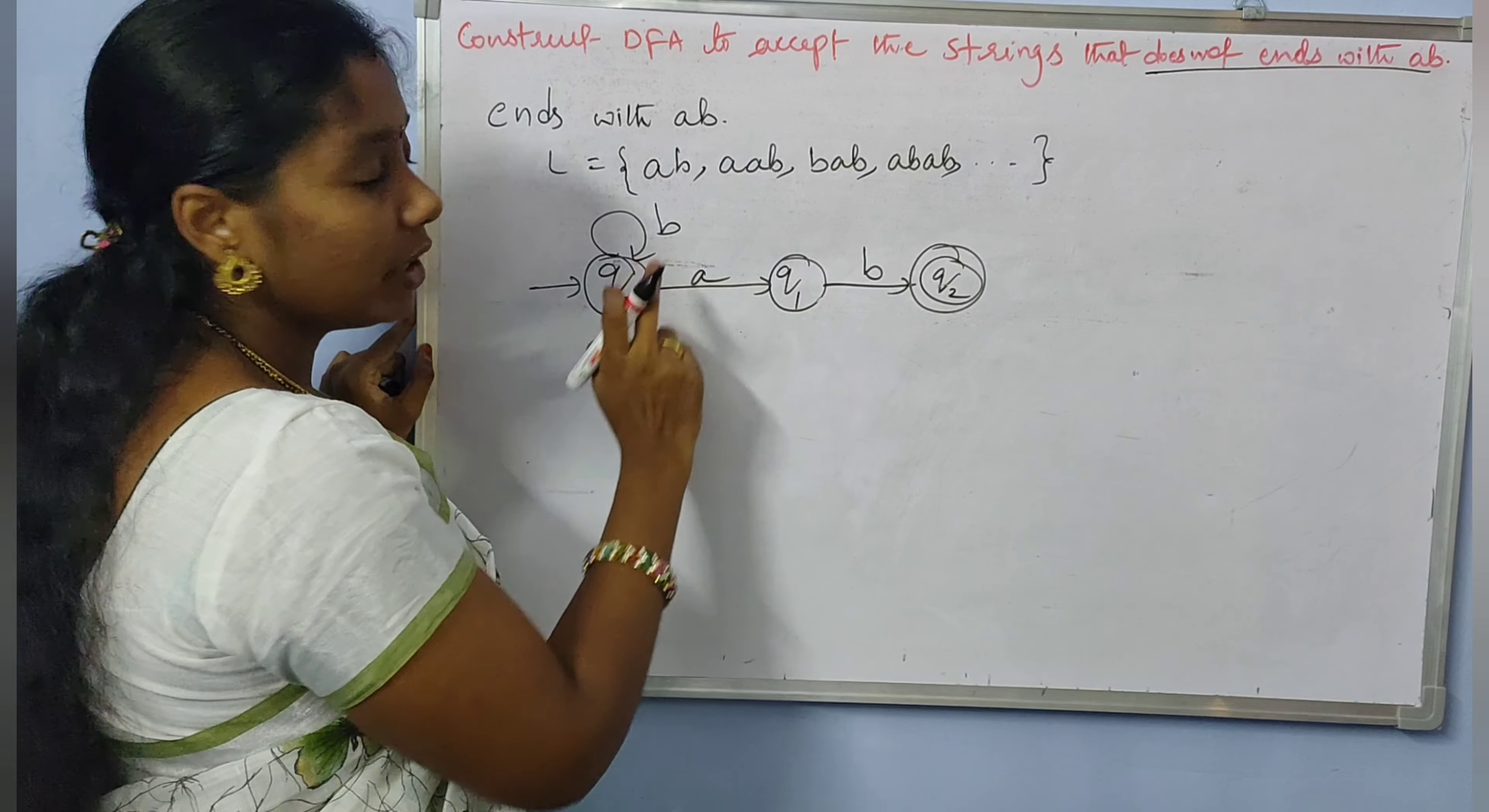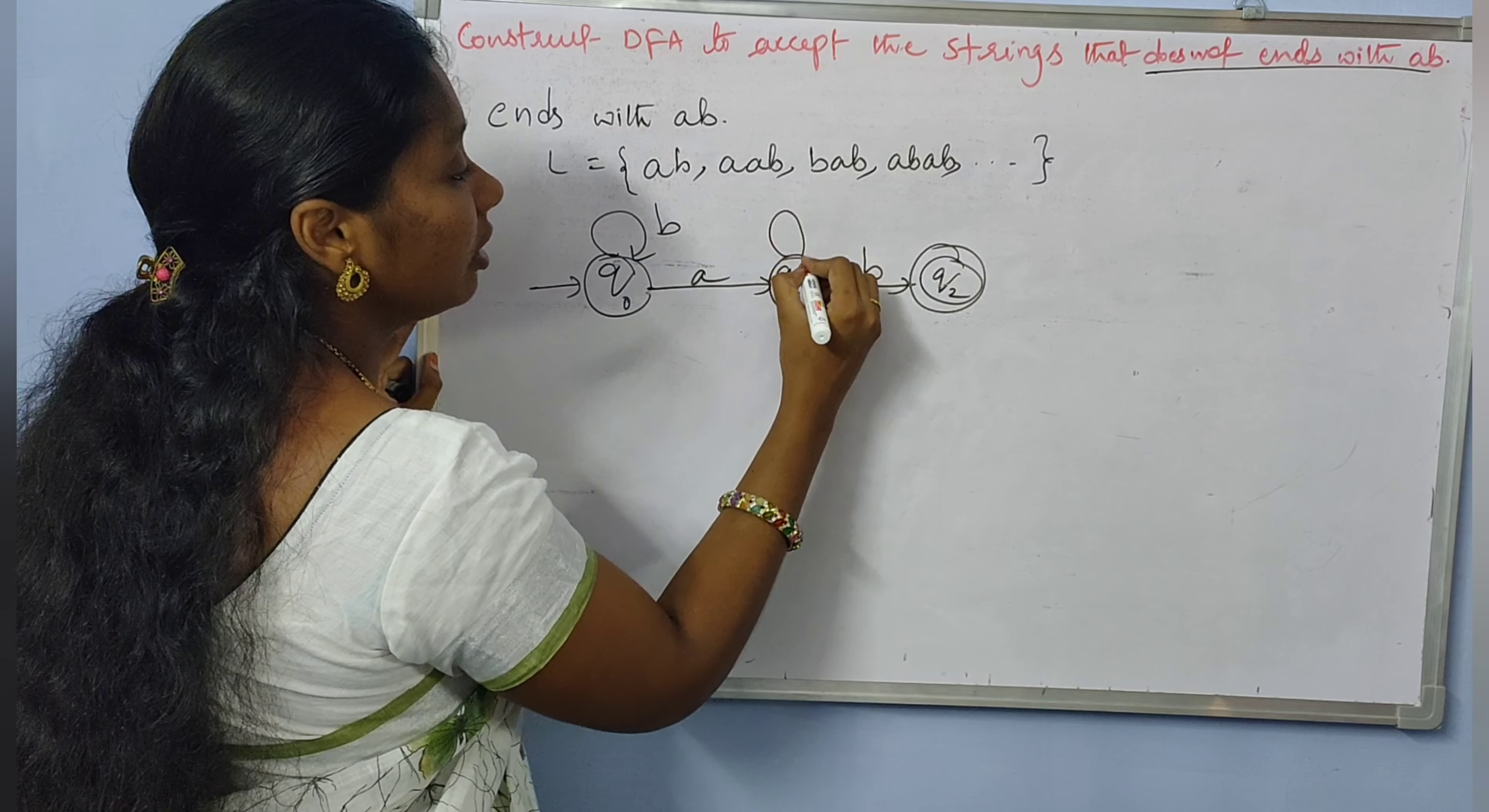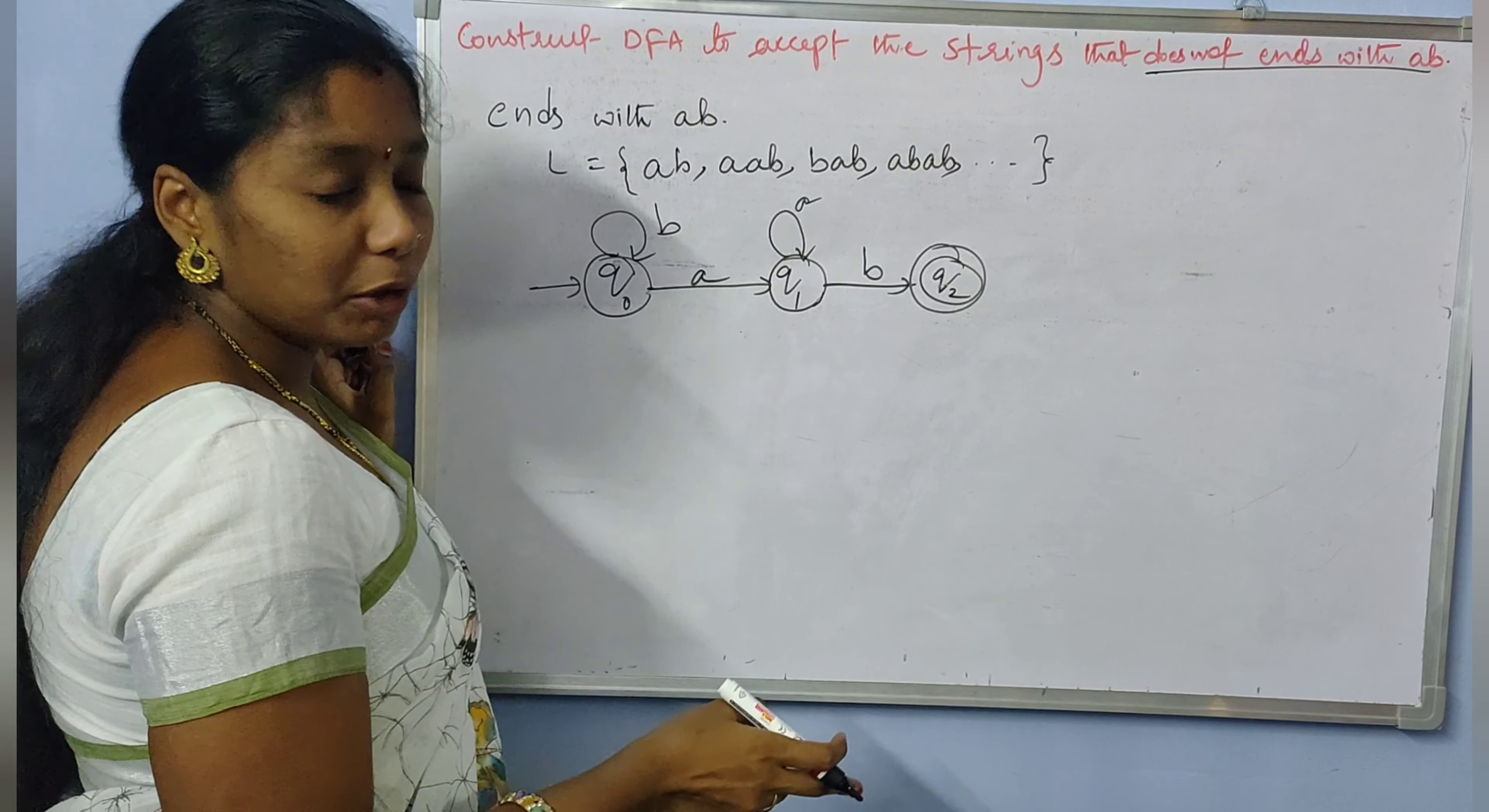So Q0 has A and B transitions. From Q0, A goes to Q1. Since it needs to end with AB, if we get A at Q1, we can have self-loop A.